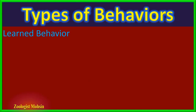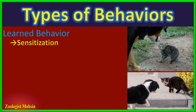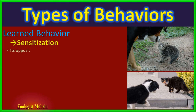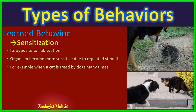The next learned behavior is sensitization, which is usually considered the opposite of habituation. When a cat is chased several times by dogs, she becomes more sensitive to dogs due to the repeated stimulus and response. After many chases, she even becomes sensitive to puppies — which she would normally ignore — and whenever she encounters a puppy, she hisses at them and shows anger and furiousness. Such behaviors are termed sensitization.